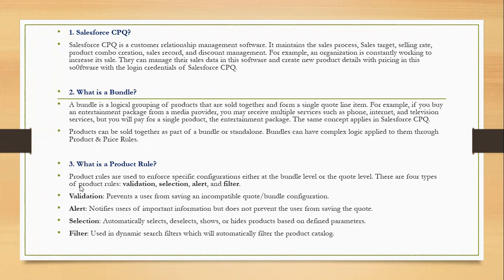What is a product rule? Product rules are used to enforce specific configurations either at the bundle level or the quote level. There are four types of product rules: validation, selection, alert, and filter. Validation prevents a user from saving an incomplete quote configuration. Alert notifies of important information but does not prevent users from saving the quote. Selections automatically select, show, or hide products based on defined parameters. Filters are used in dynamic search filters which automatically filter the product catalog.